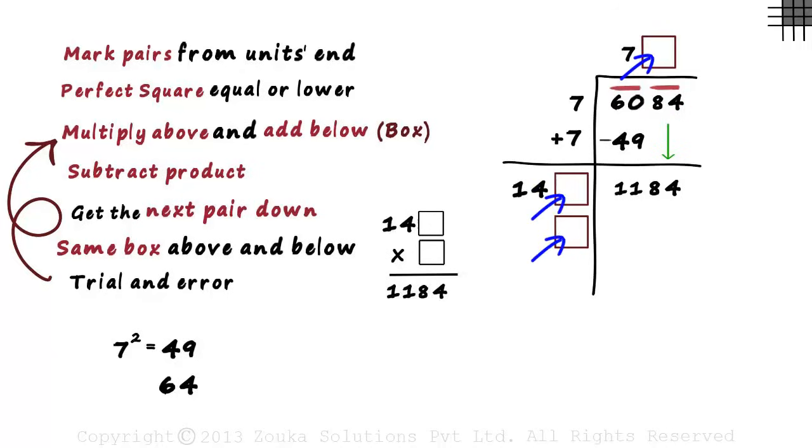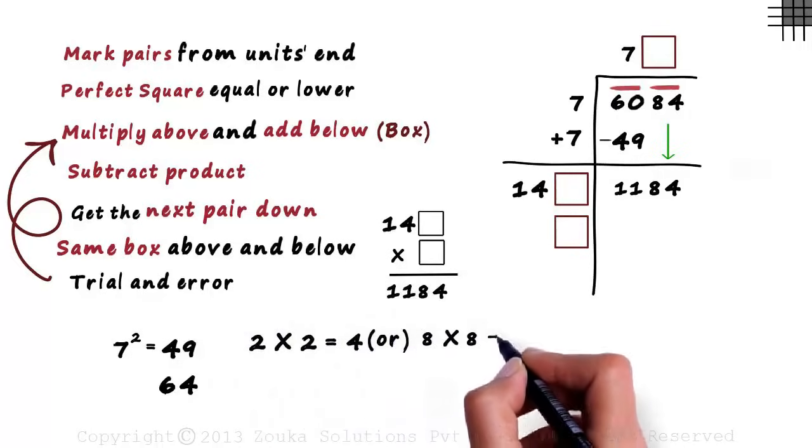We know all the boxes contain the same digit and any digit from 0 to 9 can be in it. That doesn't mean we try all digits one by one starting from 0 until we reach 9. Look at the units digit of the result we want. It's 4. So the product of the two digits in the boxes must have 4 as the units digit. So we narrow down our possibilities to just two choices.